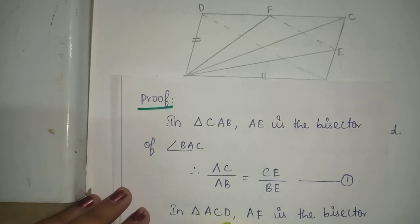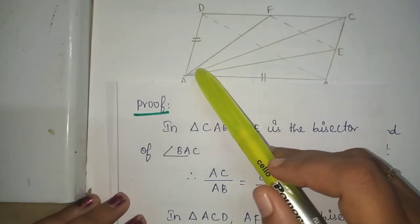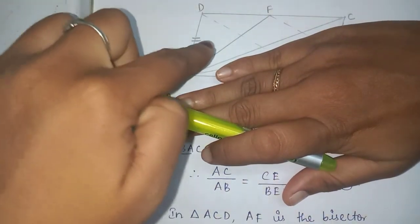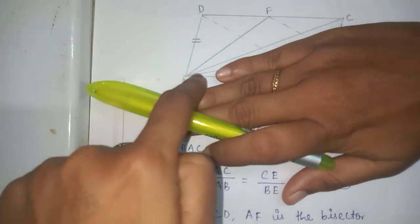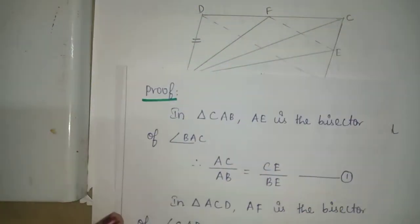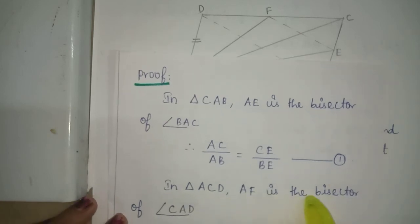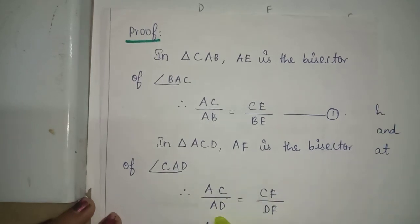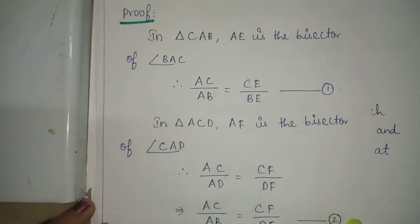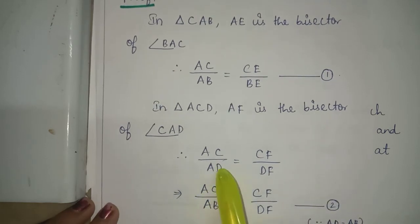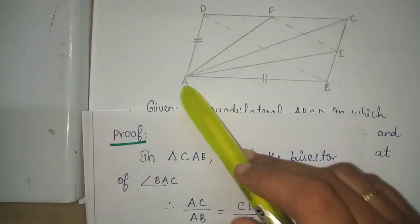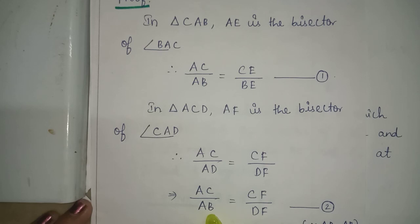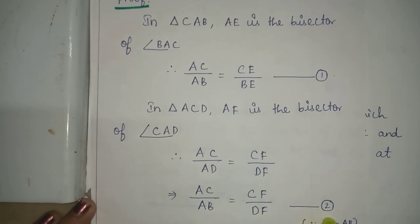Similarly, in triangle ACD, AF is the bisector of angle CAD. By the angle bisector theorem: AC by AD is equal to CF by DF. Since AB equals AD, AC by AD is the same as AC by AB — equation 2.